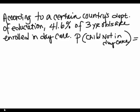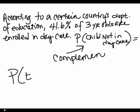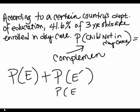Okay, let's look at this problem. According to a certain country's Department of Education, 41.6% of 3-year-olds are enrolled in daycare. So what is the probability of a child not in daycare? This right here is called the complement, the complement of probability. That's saying that a probability of an event happening, plus the probability of an event not happening, and it's denoted with that prime. You can also see it as a bar in different textbooks. But you can see it with the prime or the bar, and it has to equal 1. And that's kind of what I was talking about earlier.